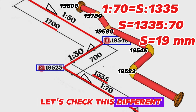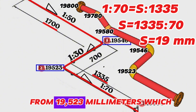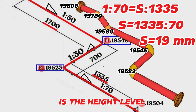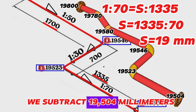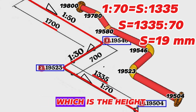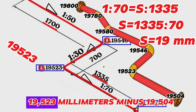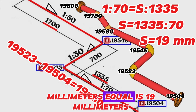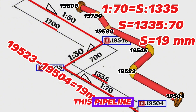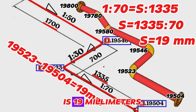Let's check this with a different method using elevation levels. From 19,523 millimeters, which is the height level of the turn-to-the-south point, we subtract 19,504 millimeters, which is the height level of the last point of the pipeline. 19,523 minus 19,504 equals 19 millimeters. It means the slope of this final part of the pipeline over 1,335 millimeters distance is 19 millimeters.